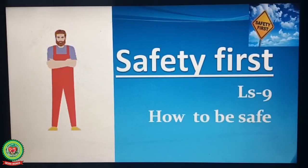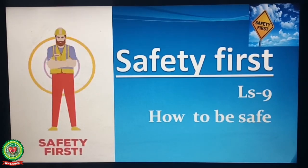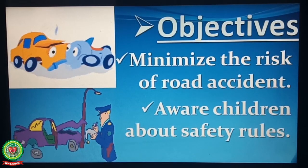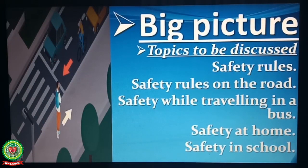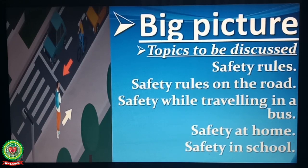Good morning everyone, welcome to the science class. Today we are going to start Unit: Safety First, Lesson 9: How to be Safe. Objectives: minimize the risk of road accidents, make children aware about safety rules. Topics to be discussed: safety rules, safety rules on the road, safety while traveling in a bus, safety at home, and safety in school.